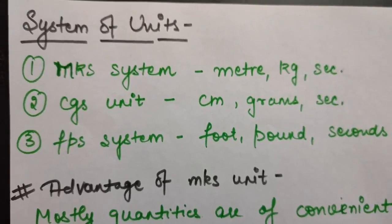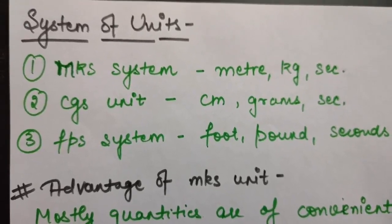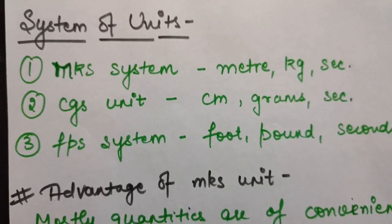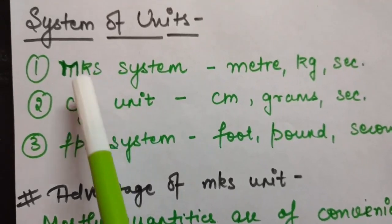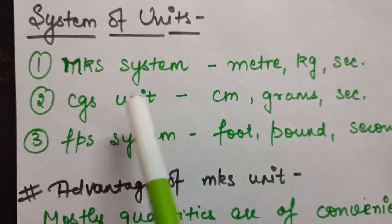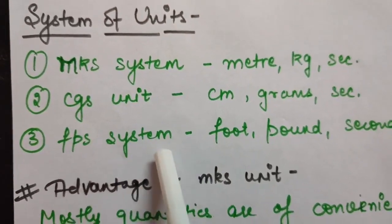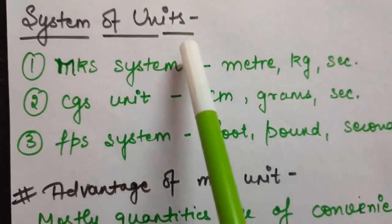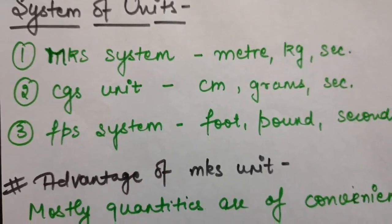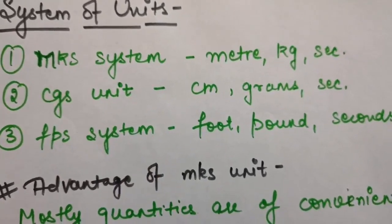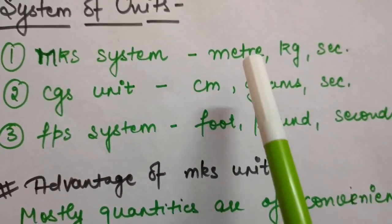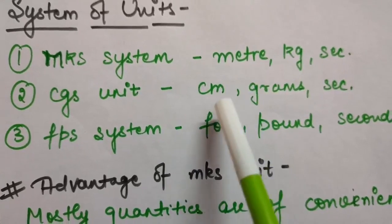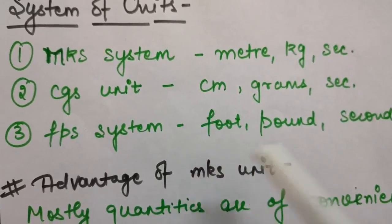The first topic is system of units. Basically we have various systems of units — for example, the MKS system, the CGS system, and the FPS system. These units are used basically to describe any quantity. For example, as you know, length can be described in meters, in centimeters, or in foot also.